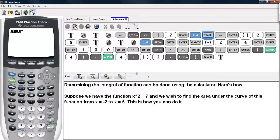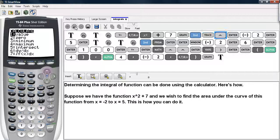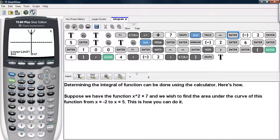We can hit second and then trace. This brings us to the calculate menu. Selecting the last option, the integral of f option, brings us to the lower limit, which we select to be negative 2, and then the upper limit we select to be 5, according to our example.